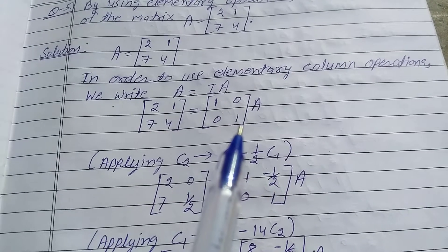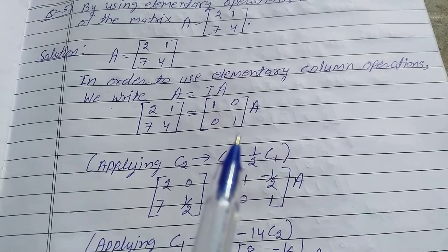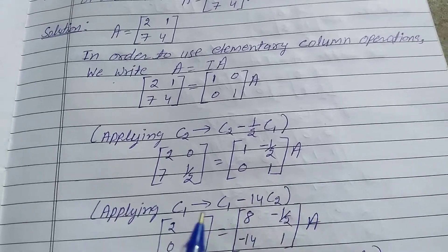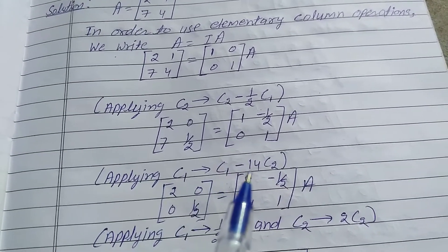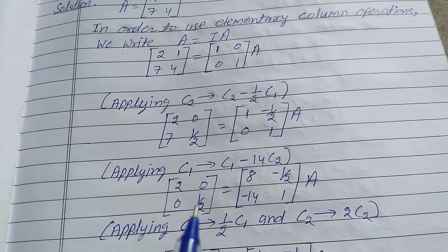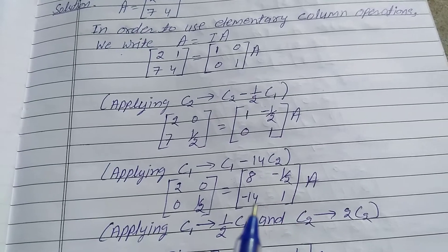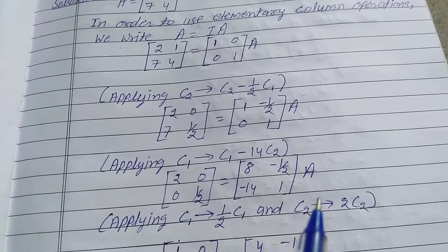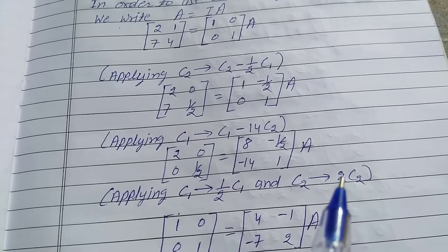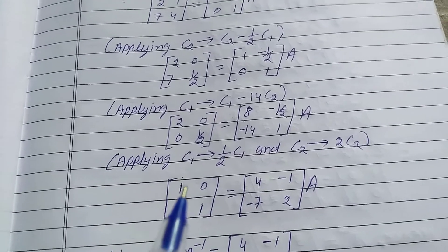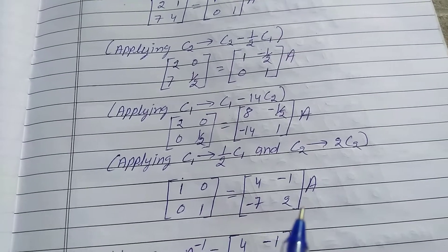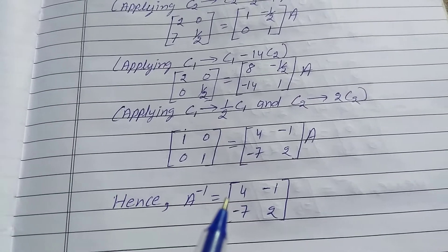So C2 is 2 minus 1/2 of C1, giving 0. Now applying C1 → C1 minus 14 times C2. The left matrix becomes [[2, 0], [0, 1/2]], and the right side gives [[4, -1], [7, 2]] times A.